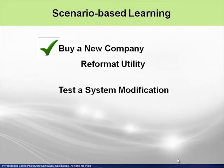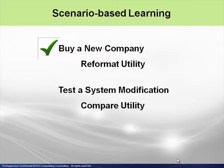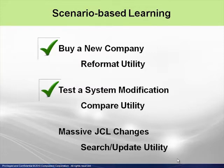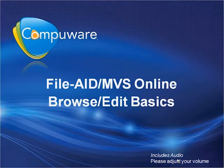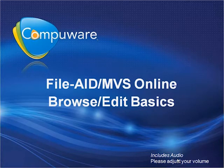You are testing a major system modification and must be certain the output is correct — you will learn how the compare utility can solve this problem. You must do massive JCL changes because naming conventions have changed — you will learn how the search update utility can solve this problem. I recommend that you view the FileAid editor basics module first. Consider it to be a prerequisite to any of the other modules, because it contains some fundamentals that apply to all areas of FileAid.